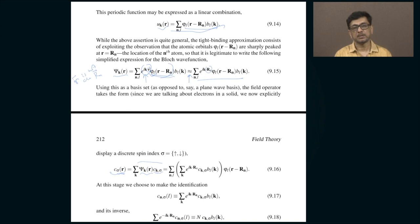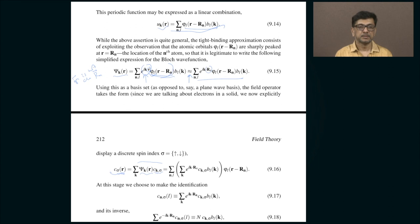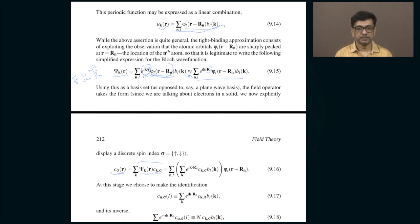Many physicists are quite satisfied that the tight binding model works and go ahead and publish papers without inquiring further — that is a matter of taste. I will stop here. In the next class I will proceed and show how to finally arrive at the hopping term and the on-site repulsion term starting from this continuum picture, finish that description, and after that we will go on to some other topics.